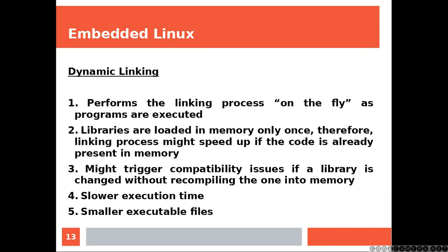Dynamic linking performs the linking process on the fly as programs are executed. Libraries are loaded into memory only once, therefore the linking process might speed up if the code is already present in memory. Dynamic linking might trigger compatibility issues if a library is changed without recompiling.